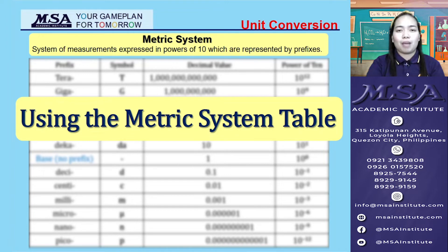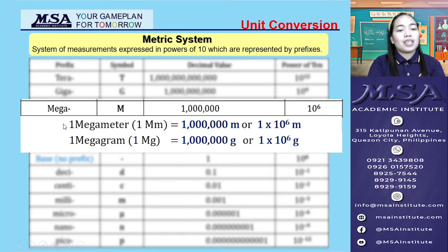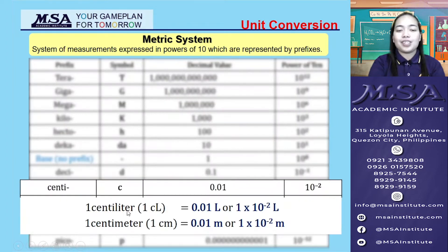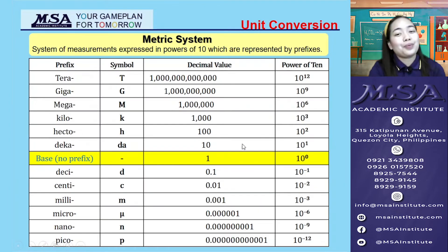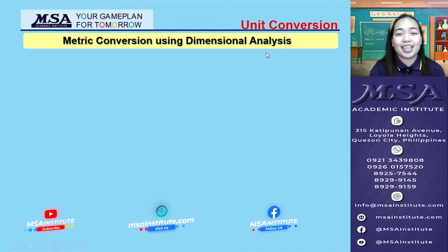So how should we use them? For example, 1 megameter is equivalent to 1,000,000 meters, or 1 times 10 raised to 6 of its base unit. On the other hand, 1 centiliter is equivalent to 0.01 of its base unit, or 1 times 10 raised to negative 2 liters. We can use this table as a guide for metric conversion using dimensional analysis.